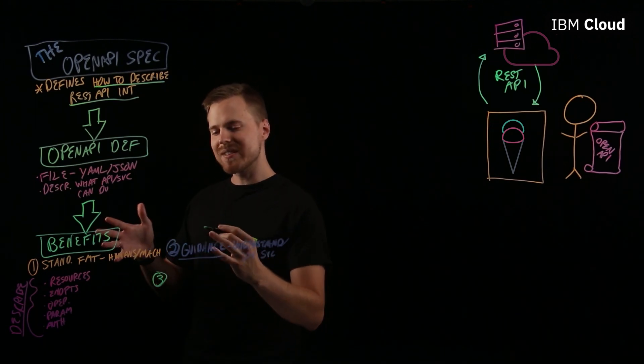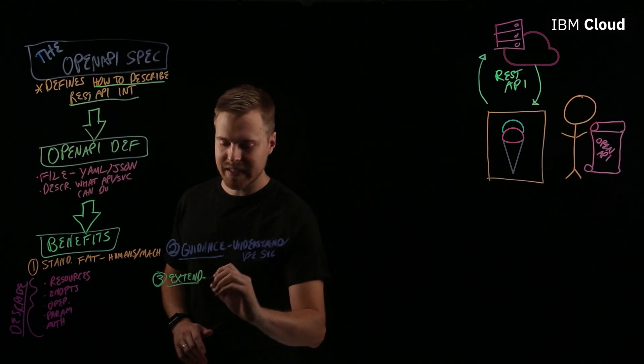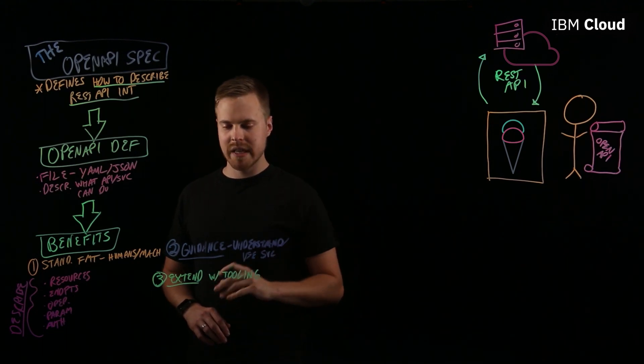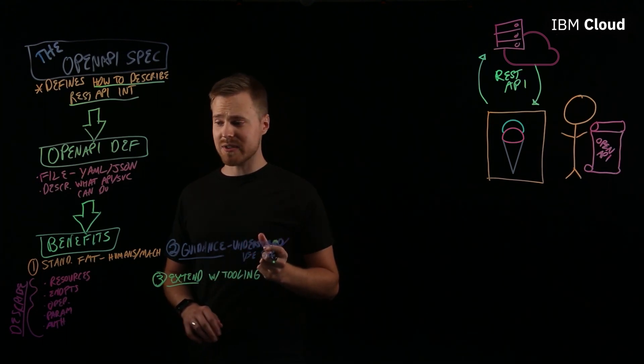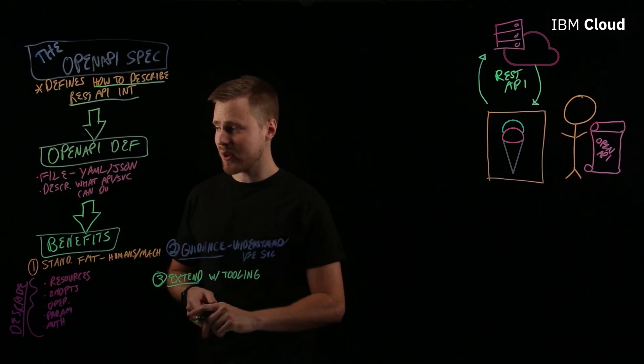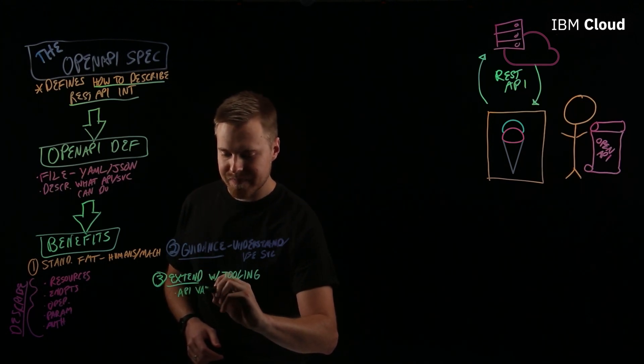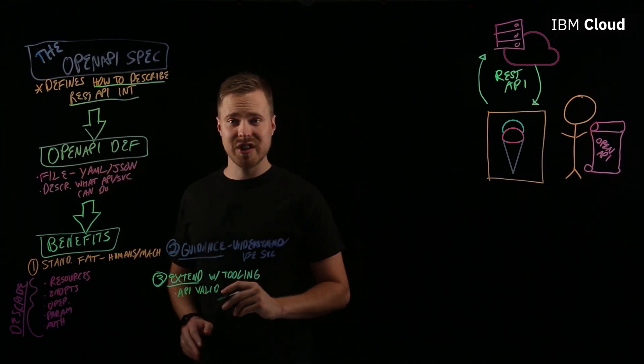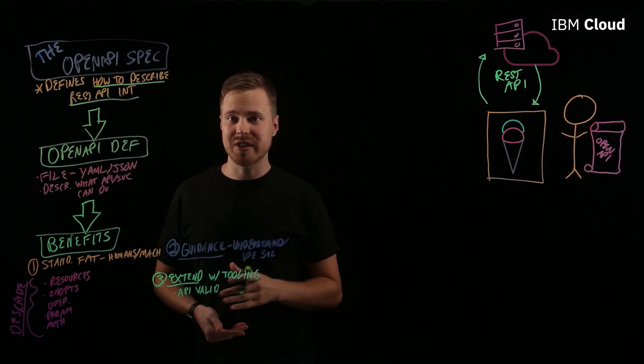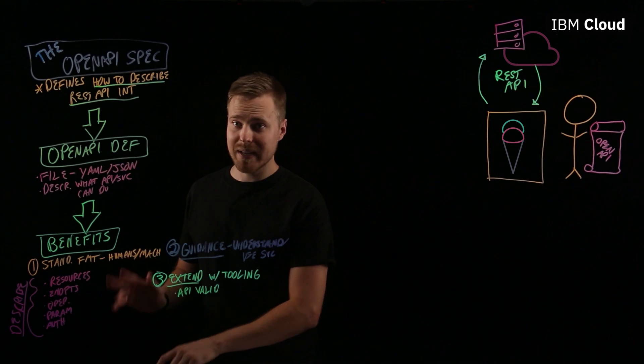And then third, OpenAPI allows you to extend your REST API with tooling. There's some pretty neat tooling available that can take an OpenAPI definition as input and produce some pretty neat things. One example is an API validator that will take in an OpenAPI definition and run through validations to ensure that the REST API conforms to a certain set of industry standards. Not all APIs are made equal.